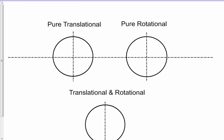This is Dr. Holt. This is AP Physics C. This lecture is on rolling motion. I want to talk about two conditions here. The first one is going to be pure translational, the second one is going to be pure rotational, and then I want to combine the two using translational and rotational.